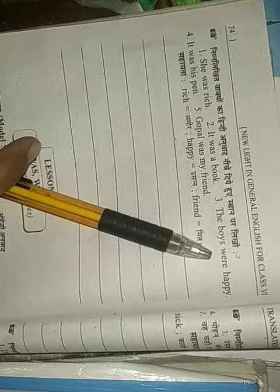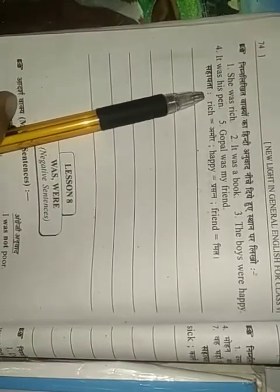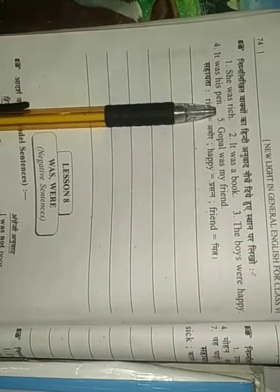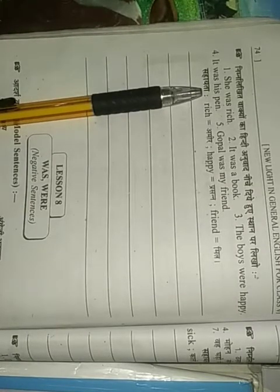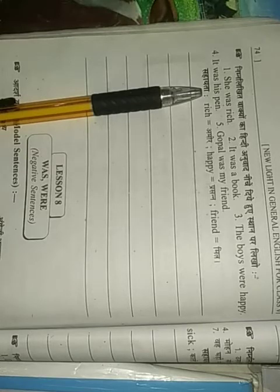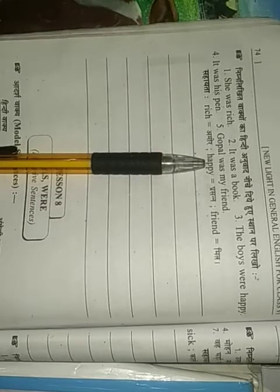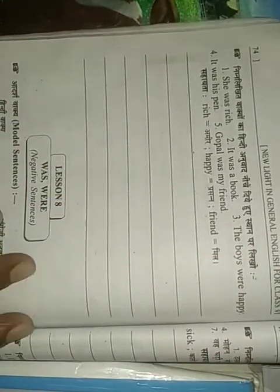The boys were happy. It was his pen. Yeh uska, it was his pen. Gopal was my friend. Gopal mera dost. Chaliye ameer rich or happy person friend mitra. So ab yeh ho gaya ab iske baad mein hemhen lesson number 8 dekheye. Ko parhna hai is lesson mein.